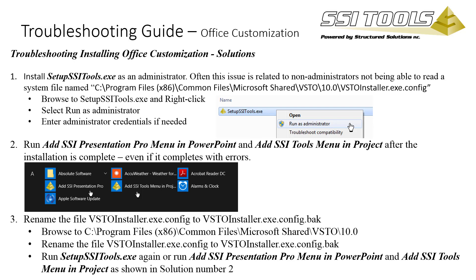Sometimes all you need to do is install SSI Tools as a system administrator using the instructions below Solution 1. Other times you'll need to run 'Add SSI Presentation Pro menu in PowerPoint' and 'Add SSI Tools menu in Project' after the installation is complete. You'll find these two shortcuts in the program group start menu in Windows 10, then follow the instructions below Solution 2.